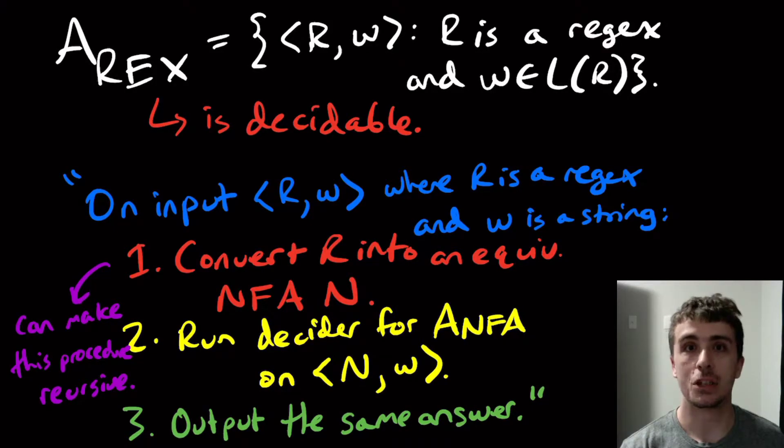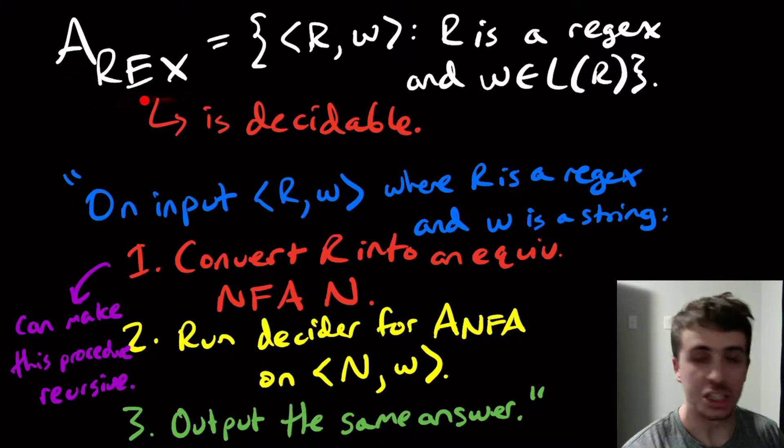Hi, welcome to another edition of Easy Theory. So we just finished talking about the acceptance problems, which are of the form A sub something.